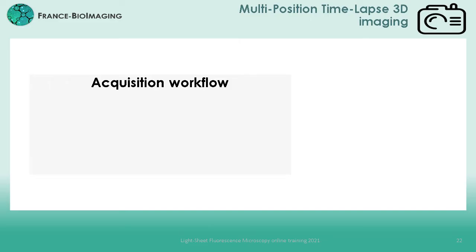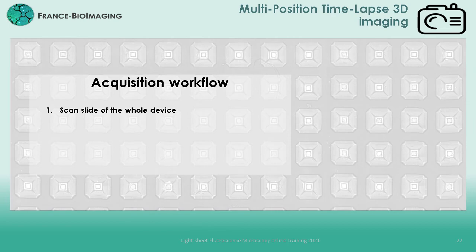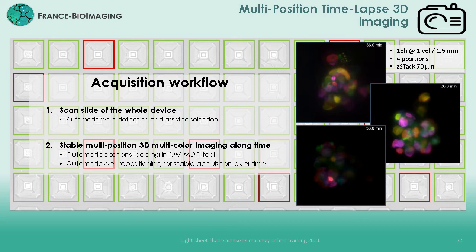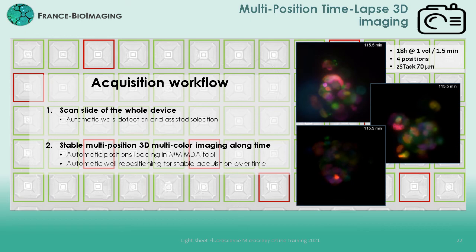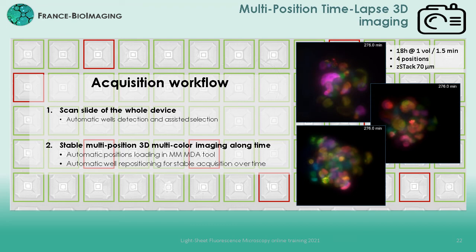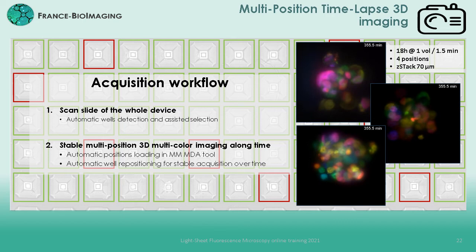We will now see how to parametrize multi-position timelapse 3D acquisitions to leverage the SOSPIN device architecture and monitor several samples in parallel, greatly increasing acquisition throughput. We developed several tools to assist in detecting the wells we want to image and stabilize the system for long-term acquisitions. The acquisition workflow is divided into two parts: first, a scan slide of the whole device surface to automatically detect all the wells and simplify their selection; then, using the MDA tool, parametrize and launch a timelapse multi-position acquisition with a drift correction tool allowing stable acquisitions over a long period — up to days. As an example, we acquired four positions for 18 hours every 90 seconds over a volume of 70 micrometers with no noticeable drift, image quality degradation, or phototoxic effects.